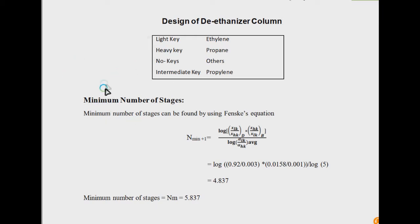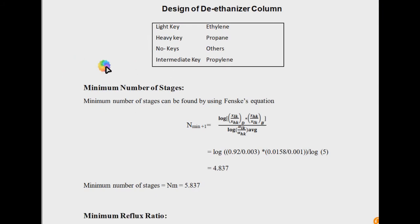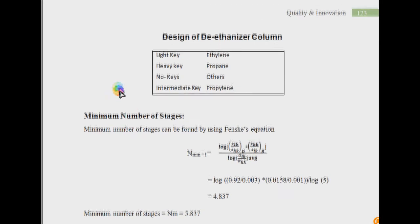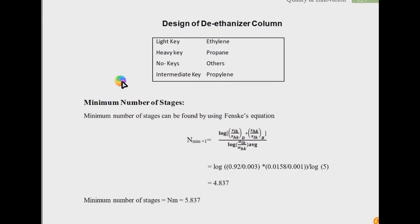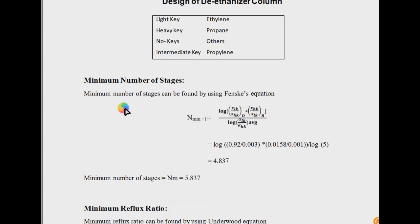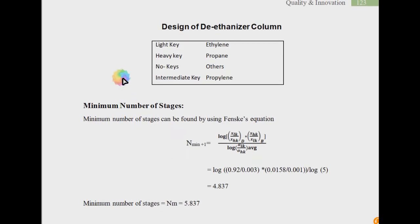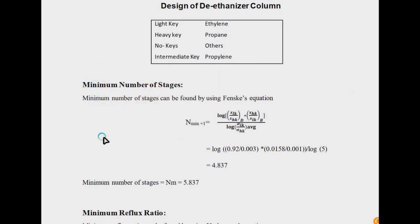For that case, most students follow the shortcut design method if they know about it. Based on the calculation of number of stages using the shortcut method, first of all, you have to calculate the minimum number of stages based on the total reflux ratio.